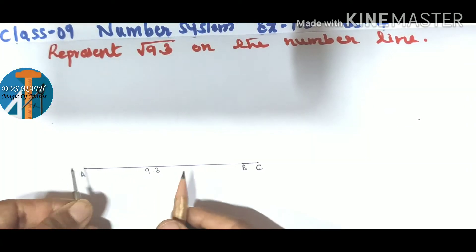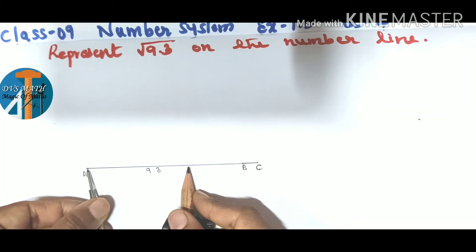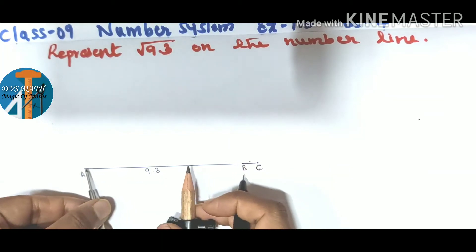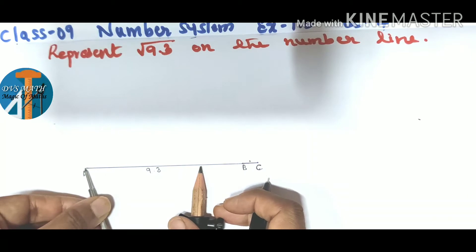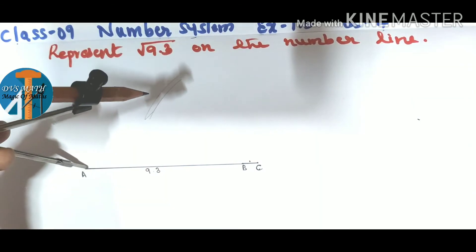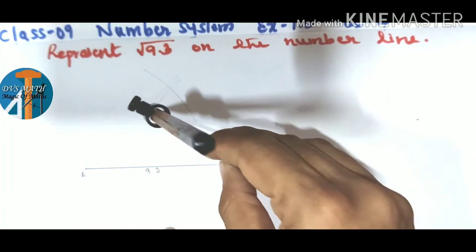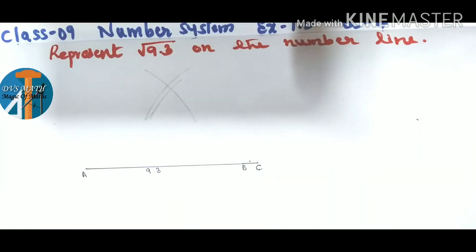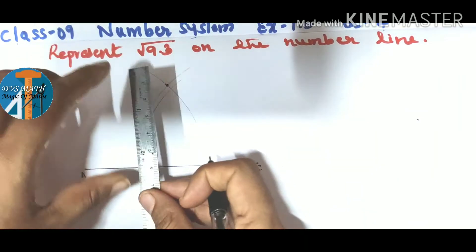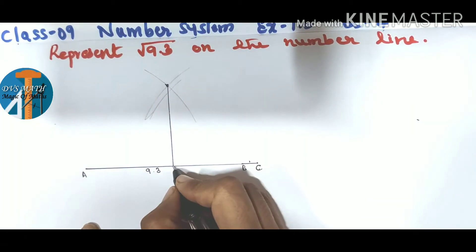Now we have to find the midpoint of A and C. For that, draw a perpendicular bisector of AC — take more than half the distance for A and C, not A and B. So AC is 10.3. From C cut one arc, and from A take another arc. Where they intersect gives us the midpoint. Draw a vertical line through that midpoint which touches AC.